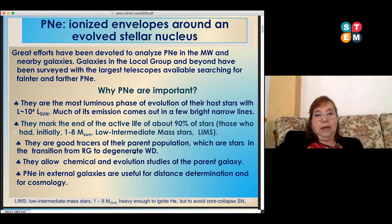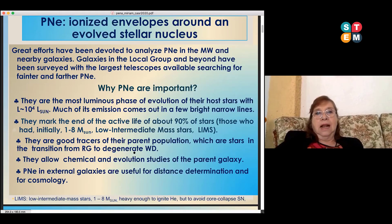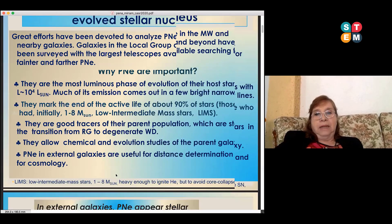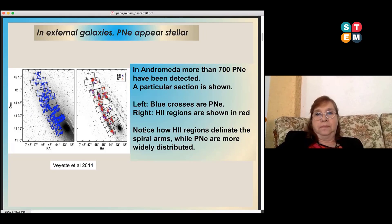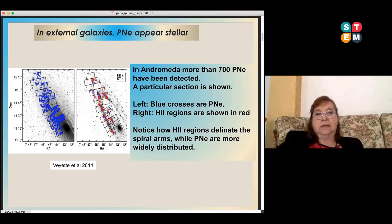Planetary nebulae in external galaxies are also useful for distance determination and cosmology. In external galaxies, planetary nebulae appear stellar. Here I'm showing the case of Andromeda, where more than 700 planetaries have been detected. In blue are the planetary nebulae detected in a particular zone of Andromeda, and to the right in red are the HII regions. Notice how HII regions delineate the spiral arms in Andromeda, while planetary nebulae are more widely distributed.